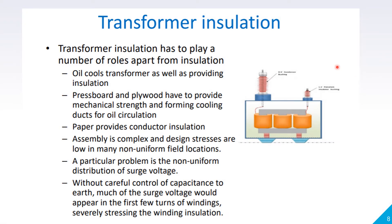Let's take the first example: transformer insulation. Transformer insulation has to play a number of roles apart from insulation. Mineral oil is used as both insulation and coolant — it cools the transformer as well as providing insulation. Pressboard and plywood provide mechanical strength and form cooling ducts for oil circulation. Paper provides conductor insulation. The transformer winding and core assembly with all insulation layers is immersed in transformer oil, which acts as coolant and insulator. Bushings serve as insulators.